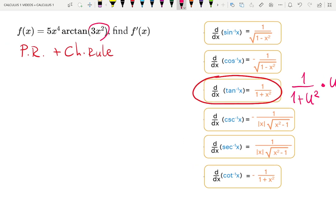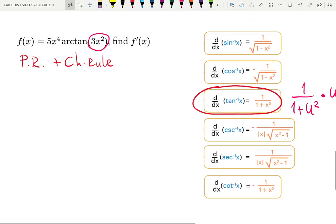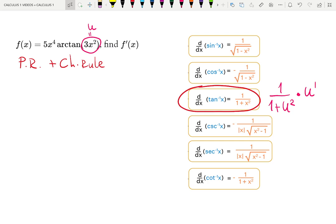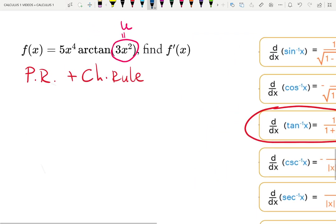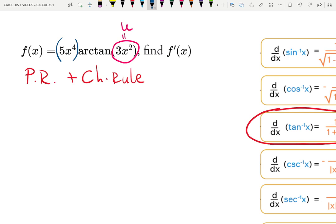And we do see it here, arctangent has 3x squared inside, so that is the input of arctangent. But also I see that it is a product rule because we have 5x to the 4 multiplied by arctangent. You could take 5 out if you want and then multiply the whole answer at the end by 5, but it's your choice.